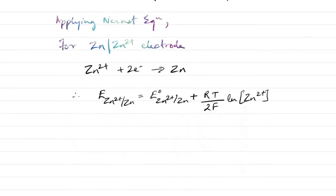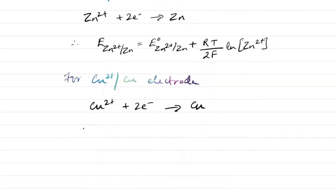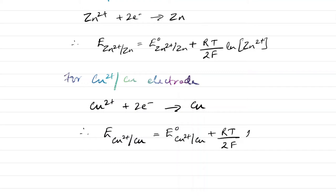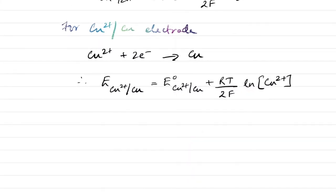For the copper electrode, the reduction reaction is: Cu²⁺ + 2e⁻ → Cu. Therefore: E(Cu) = E°(Cu) + (RT/2F) log[Cu²⁺].